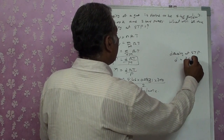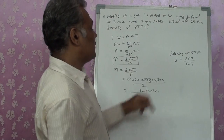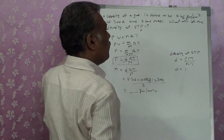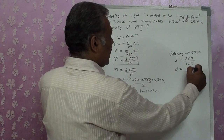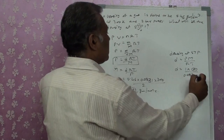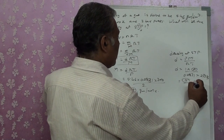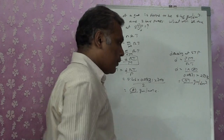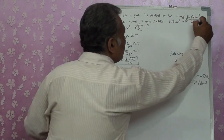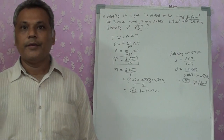At STP, P = 1 bar and T = 273.15 K. So density at STP = (1 × M) / (0.0831 × 273.15). Substitute the molecular mass you just found and calculate. The unit of density will be g/dm³, since we kept density in g/dm³ throughout. Don't make an error with the density unit.